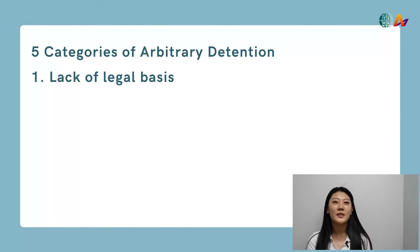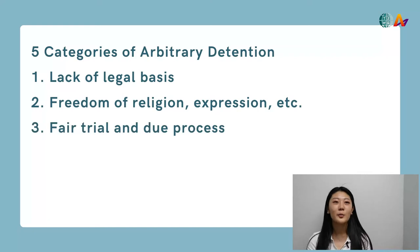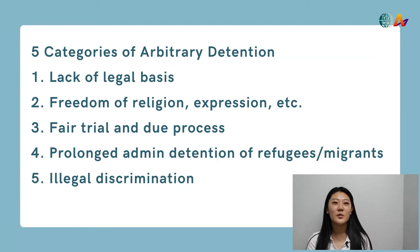Number one, when detention lacks any legal basis. Number two, when detention is the result of one's exercise of human rights, such as the freedom of religion, expression, or assembly. Number three, when the right to a fair trial has been gravely violated. Number four, when asylum seekers, refugees, or migrants are subjected to prolonged administrative detention. And number five, when detention is the result of illegal discrimination based upon ethnicity, gender, political opinion, sexual orientation, and the like.